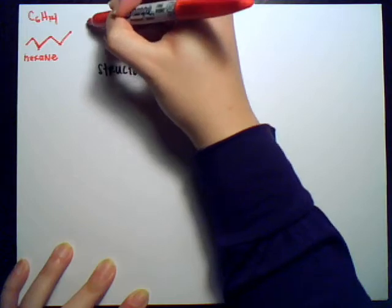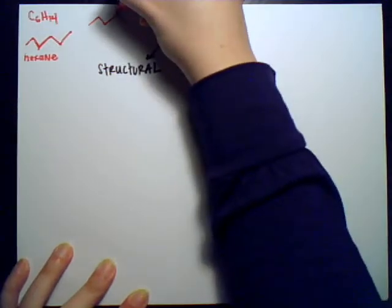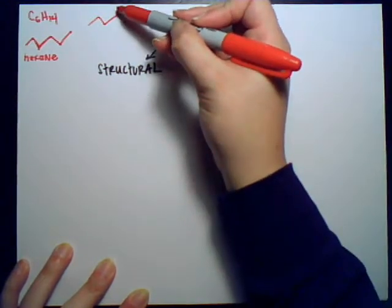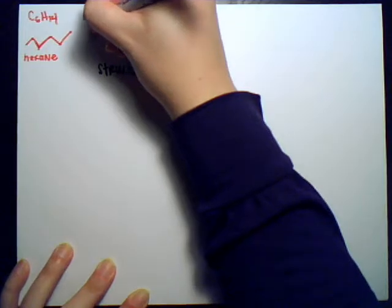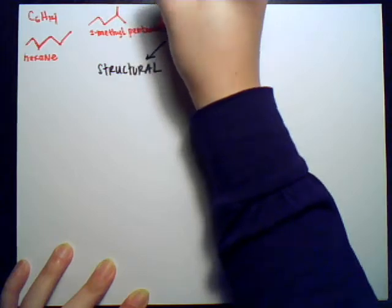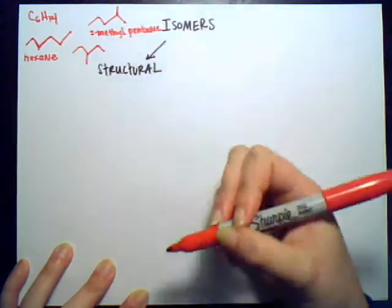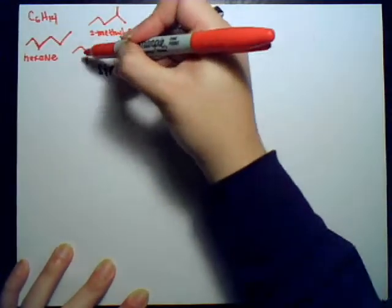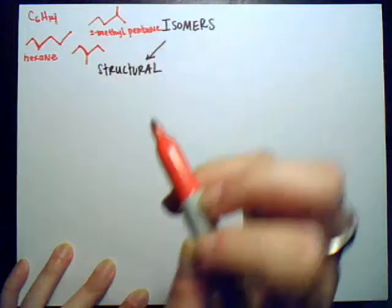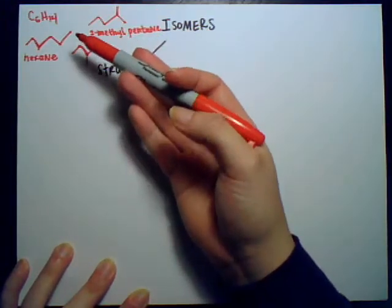So that would be a pentane backbone, and then we took that last methyl group and stuck it right there — giving us 2-methylpentane. Or let's say we stuck it on one of the other carbons — that gives us 3-methylpentane. So all of these molecules are completely different in their chemical properties, yet they happen to share the same molecular formula.